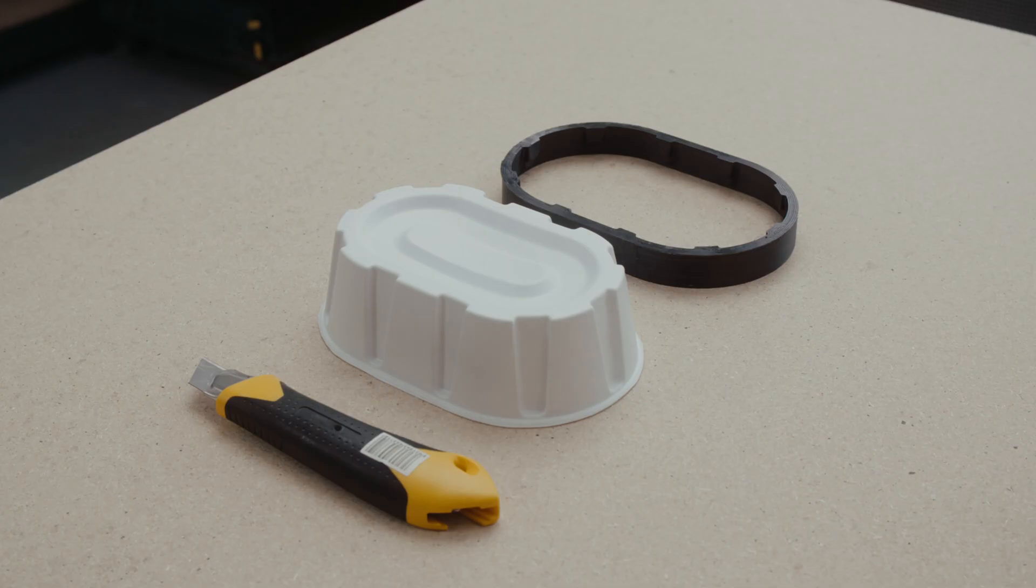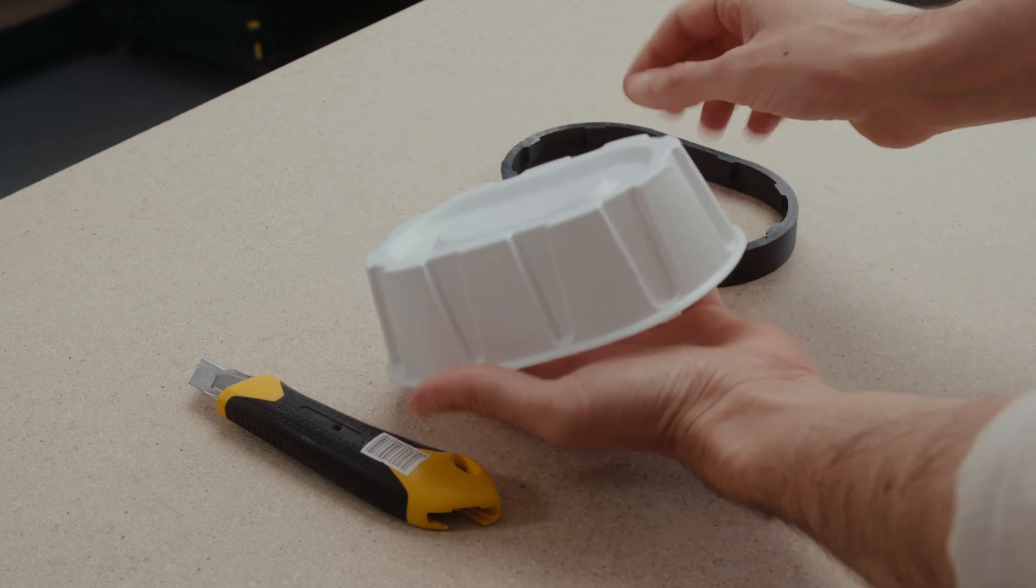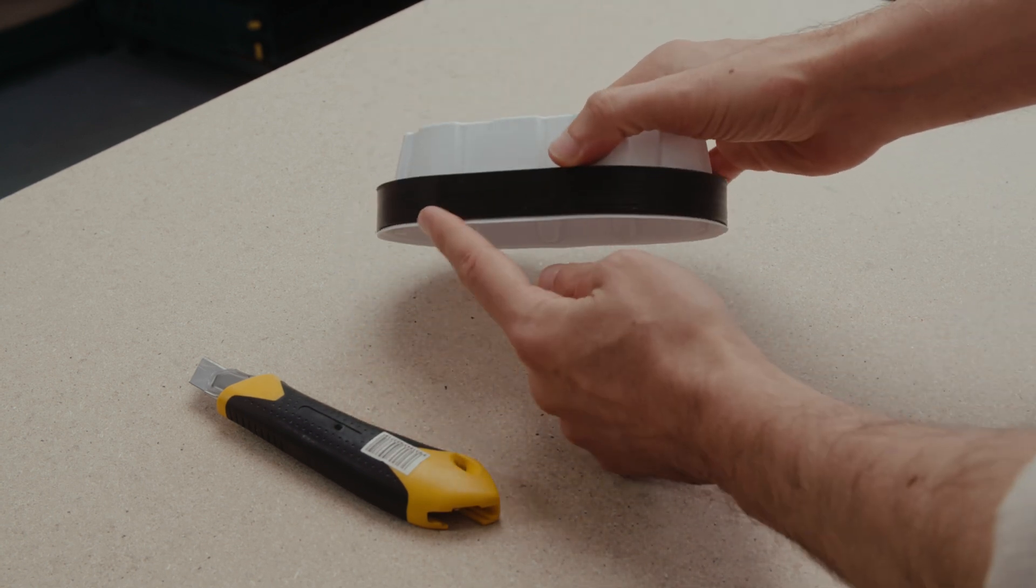Also, if you're using the multiplier for small batch production, consider making a jig like in this packaging prototype so you can quickly and accurately post-process the part.